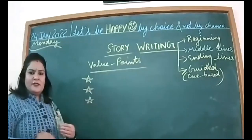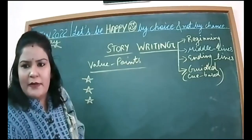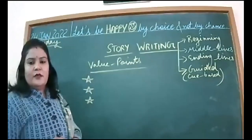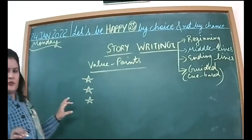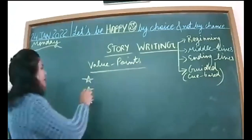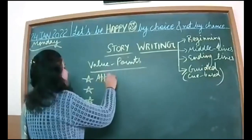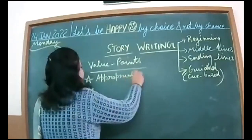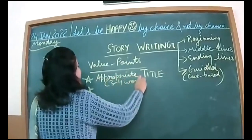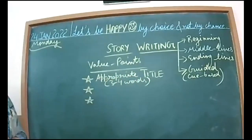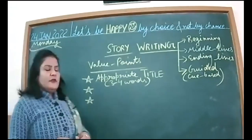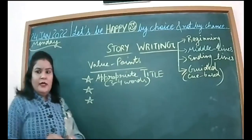I will not be asking you to unmute in this combined class since I don't know the students — just listen and note down the value points. The very first value point: you need to think of an appropriate title — up to three to five words is fine. Avoid one-word titles in the story; one-word titles are to be prohibited.